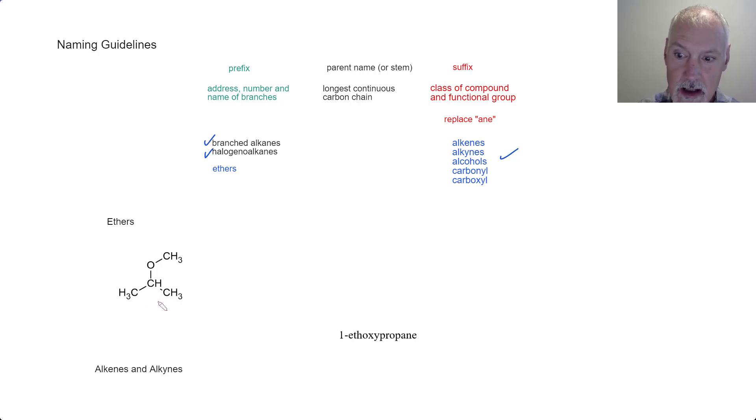I begin by identifying the longest continuous chain of carbon, which in this case is a three carbon chain: one, two, three, and I would write down propane. I then identify the branch. This branch with the oxygen attached to a methyl group is called methoxy. So to complete the name I put the address or location of this methoxy group: two methoxy propane.